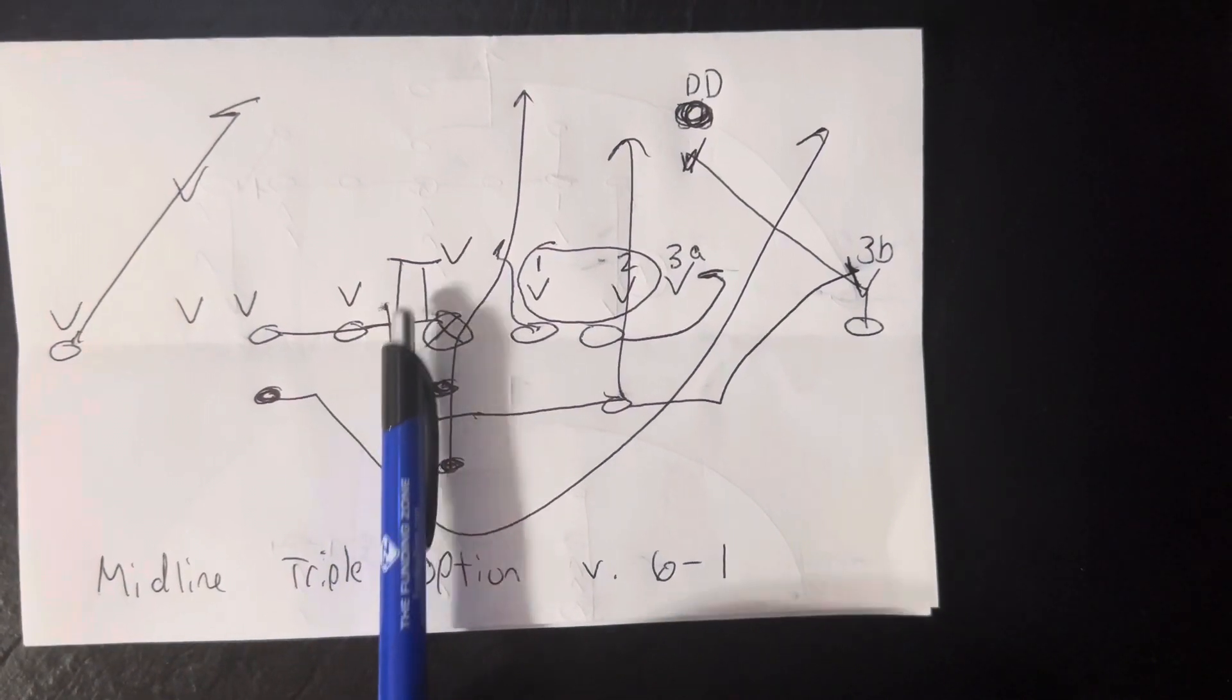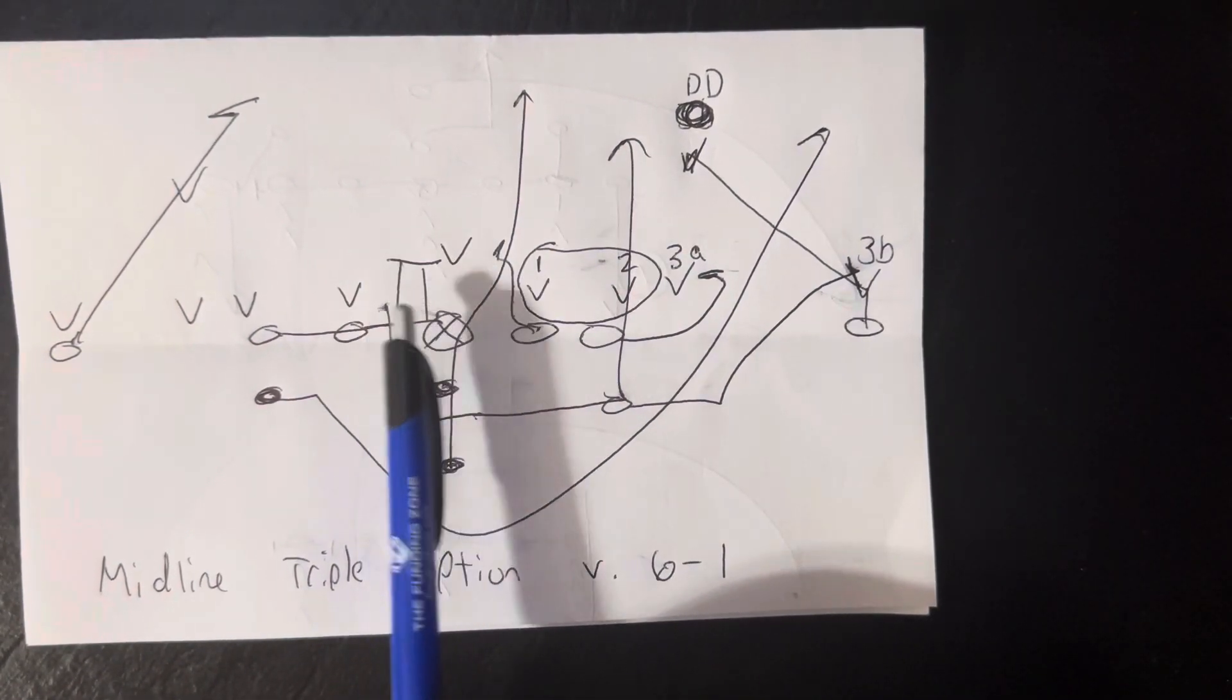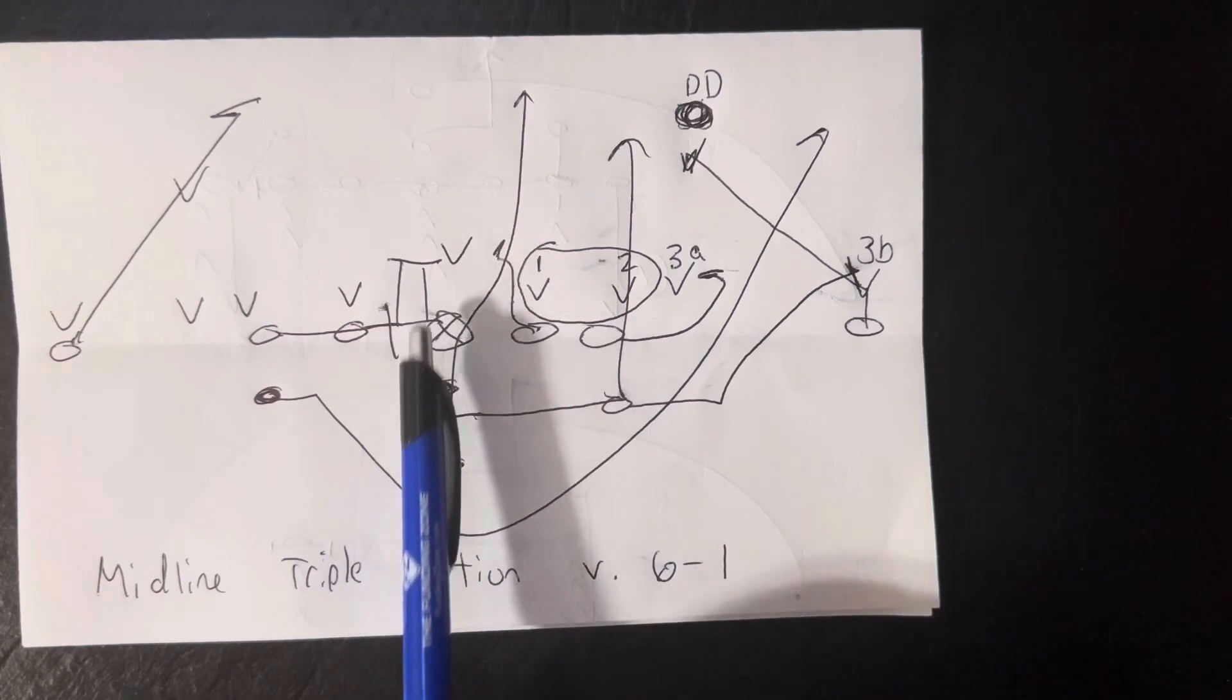Center and the backside guard are going to reverse ace the A-gap because there's no one or two-eye. So they're going to reverse ace it.